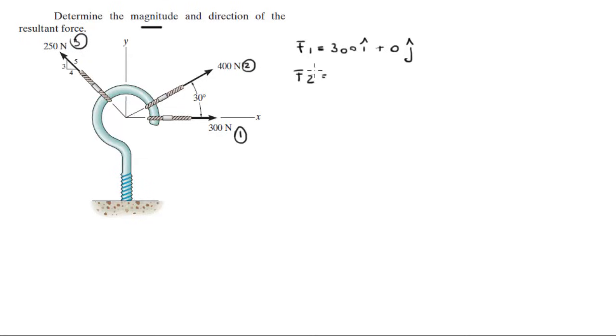F2 is equal to 400 cosine of 30 in the i plus 400 sine of 30 in the j, because this is the x component and this is the y component, and this angle is 30 degrees as given right here.